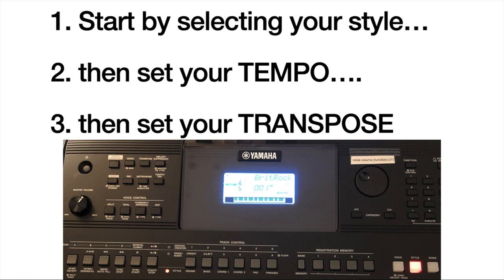The first thing you need to do is start by selecting what style you want to record, then set the tempo on your keyboard, and then set your transpose if you plan to change the key. However, I recommend that you don't transpose — just record everything in 00, which is the key of C. On your keyboard, number one is where you set your style, then tap the tempo button to set the tempo, and the transpose button is up here. I recommend do not transpose, and I'll explain why a little bit later.